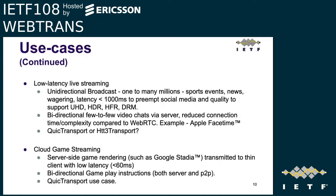Low-latency live streaming is the use case closest to Will's work at Akamai. The unidirectional broadcast case — one stream to a million people for news, events, and wagering — targets sub-one-second latency. Traditional segmented media can hit low seconds end-to-end. What's needed is quality supporting UHD resolutions, dynamic range, high frame rate, and DRM, which is not currently available with WebRTC.